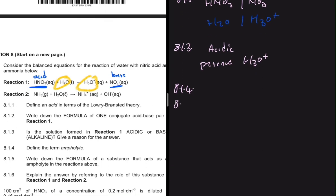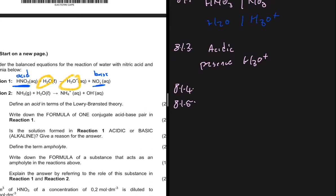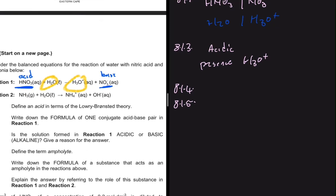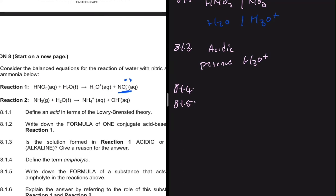8.1.5 asks for the formula of a substance that acts as an ampholyte in the reactions above. If you don't know the definition you cannot get 8.1.5. In reaction one, H2O is acting as a base — it's acting as a base because it accepts a proton. A proton acceptor is a base, so in reaction one H2O is a base.